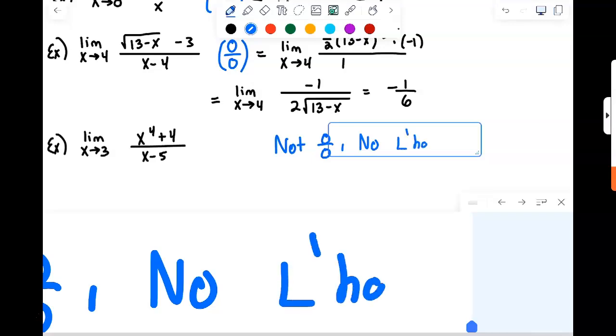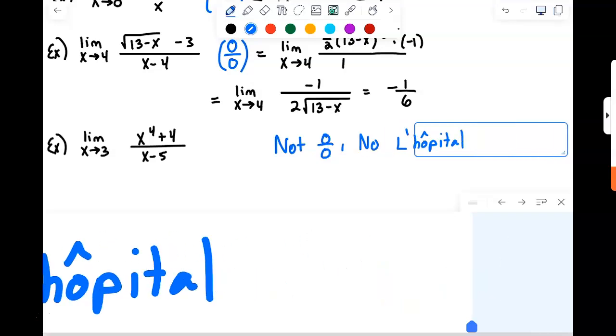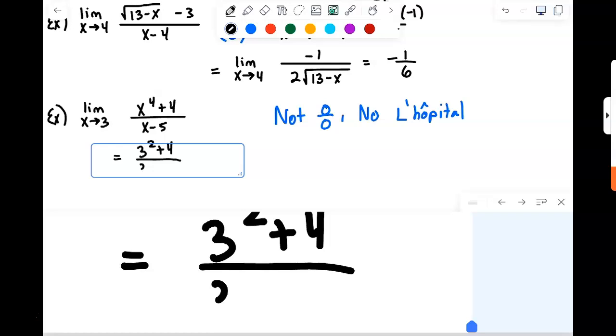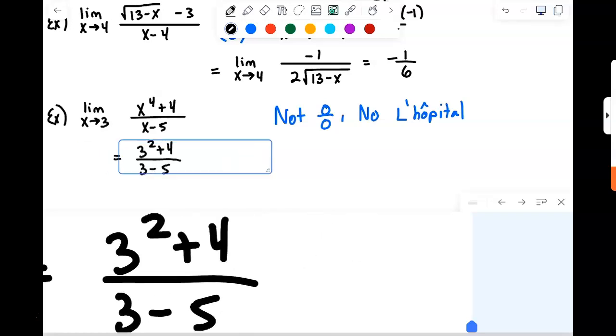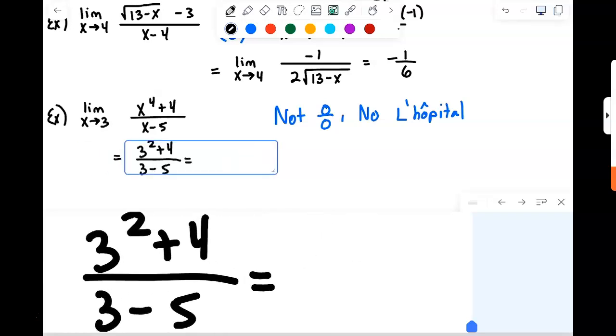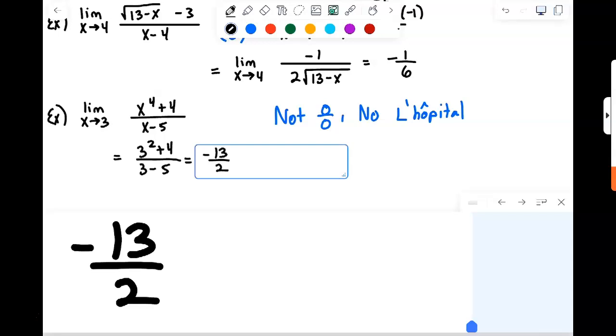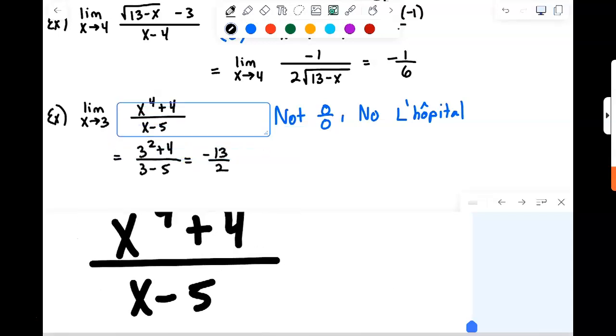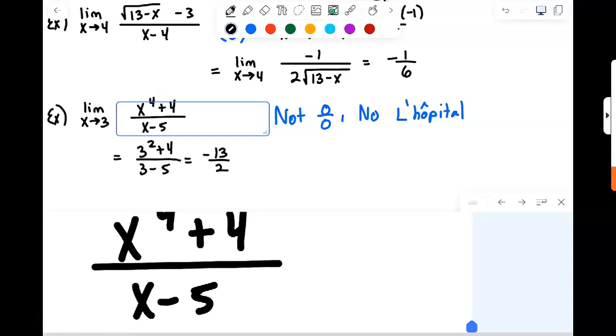It's not 0 over 0, so that means no L'Hôpital. We just compute it. 3 squared plus 4 over 3 minus 5 is negative 13 over 2. It's not a 0 over 0 limit, so it doesn't work.